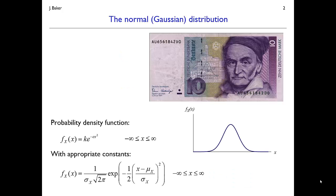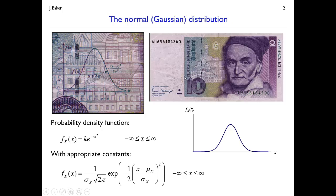This normal distribution is also called a Gaussian distribution after Carl Friedrich Gauss, who is associated with its early history. As an interesting historical artifact, this is a photograph of the German Deutschmark before the Germans converted to the Euro. It features Carl Friedrich Gauss, and if you look closely, there's actually a picture of the Gaussian distribution on their currency with the equation for the probability density function of the normal distribution. I think it's the only random variable distribution that's made its way onto currency, indicating its value or ubiquity.